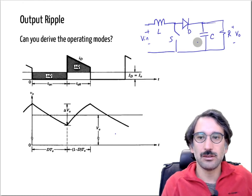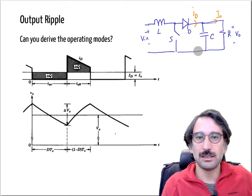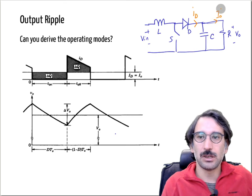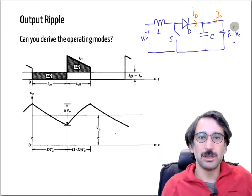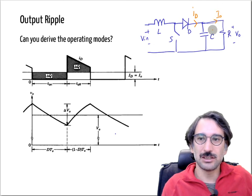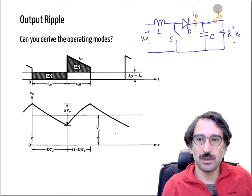Let's look at the current going in and out of the capacitor. We have the diode current and the output current. If you were to solve this exactly, it's a second-order differential equation. But since the voltage variation is just a few percent of the output voltage in a properly designed boost converter, we can assume the output voltage doesn't change much and treat the output current as constant.